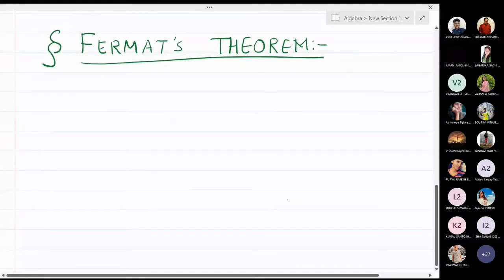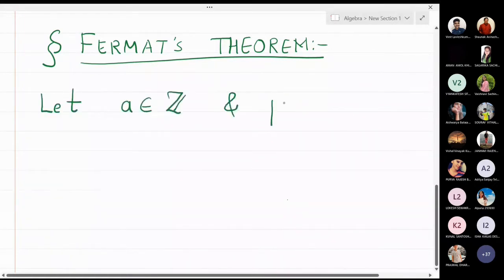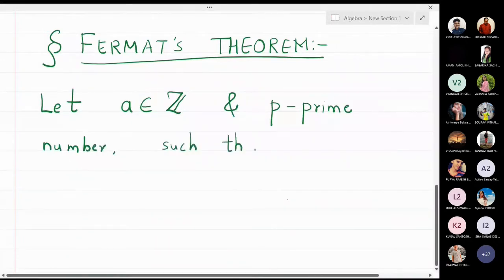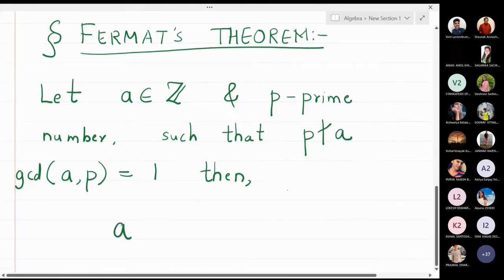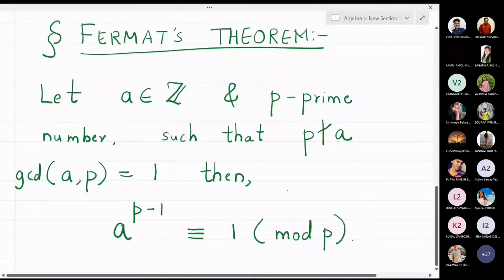In this lecture we will write down what Fermat's theorem is and see some problems related to it. Let a be some integer and p a prime number such that p should not divide a, or equivalently the gcd of p and a should be 1. Then according to Fermat's theorem, a raised to p minus 1 is congruent to 1 modulo p.